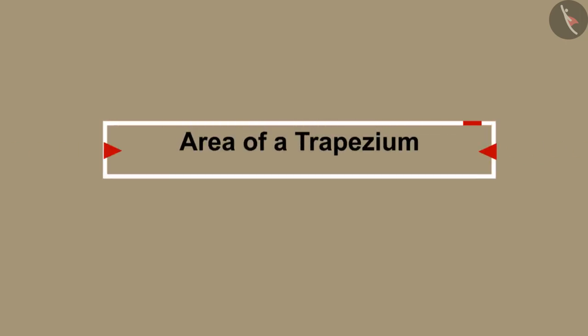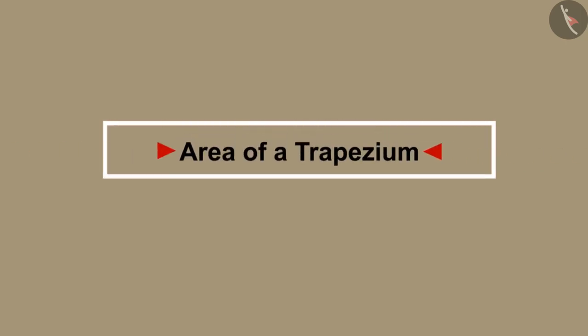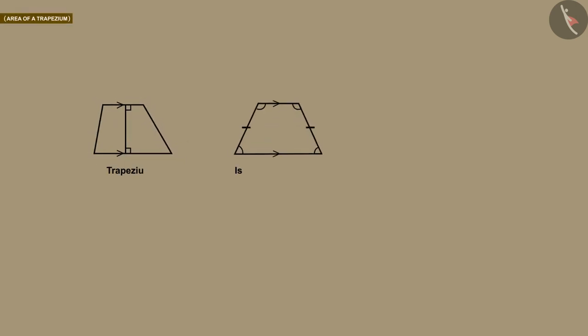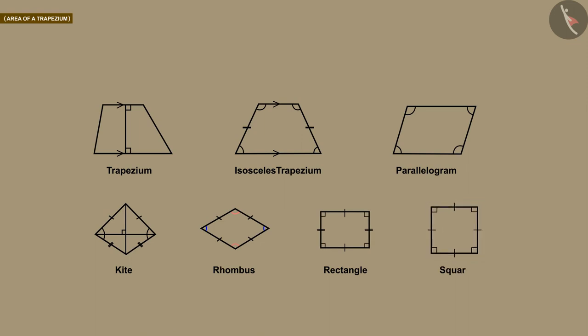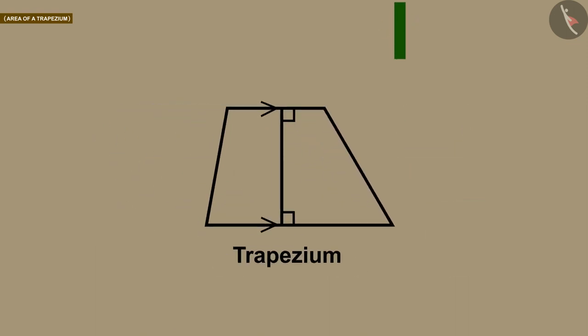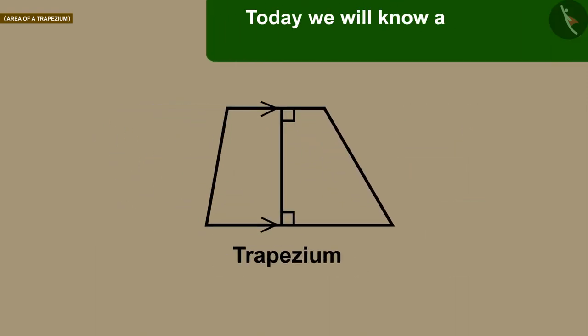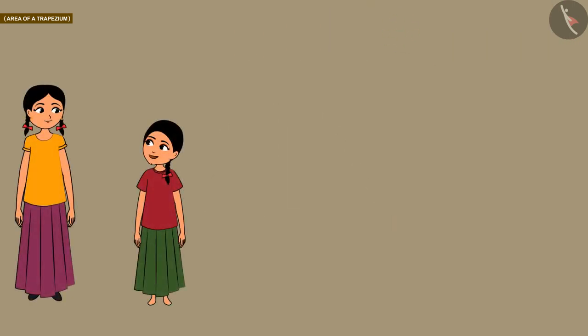You are all welcome to this video. Till now we have studied about different types of quadrilaterals. Today we will know about the area of one of these quadrilaterals which we know as trapezium.